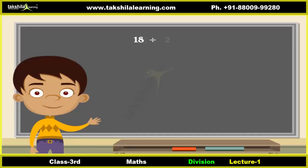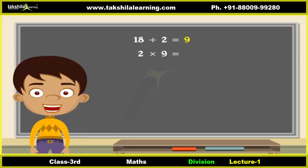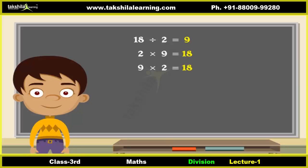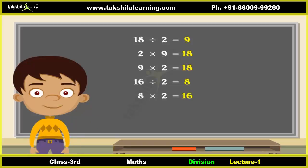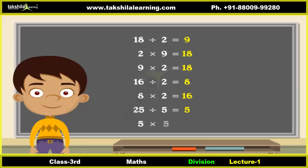Eighteen divided by two is nine, and if we multiply two and nine we get eighteen: two multiplied by nine is eighteen. Sixteen divided by two is eight, and two multiplied by eight is sixteen. Similarly, twenty-five divided by five is five, and five multiplied by five is twenty-five.